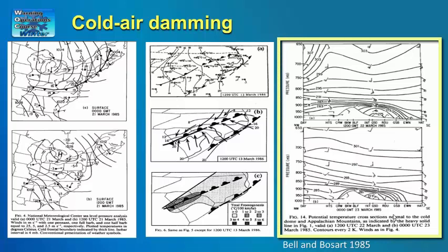The slide on the right shows a frontal zone developing east of the Appalachian Mountains on the eastern edge of the cold wedge. The frontal zone would be a favored region for development of a thermally direct circulation, which could lead to enhanced precipitation near the upward branch of the circulation east of the mountains.